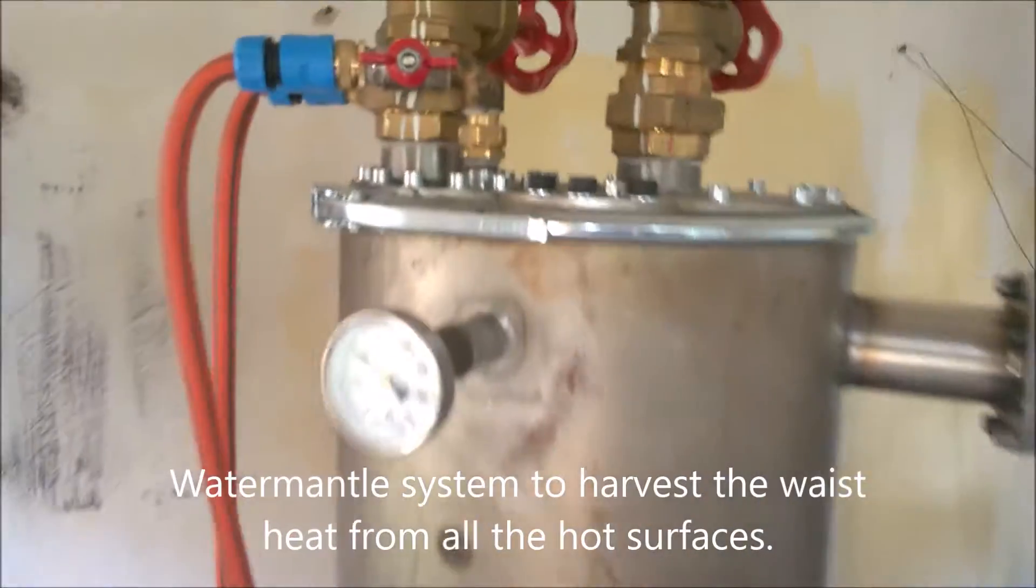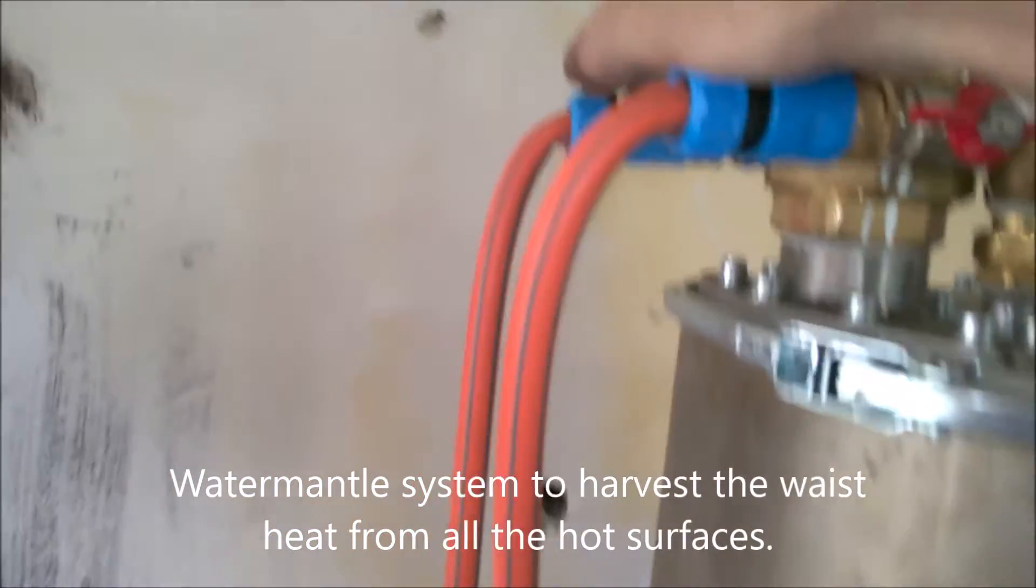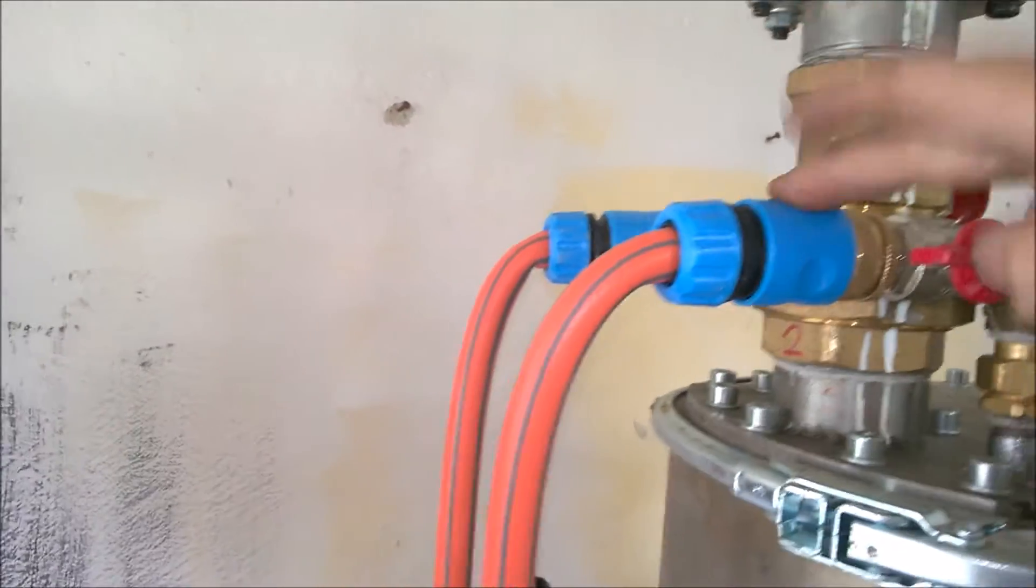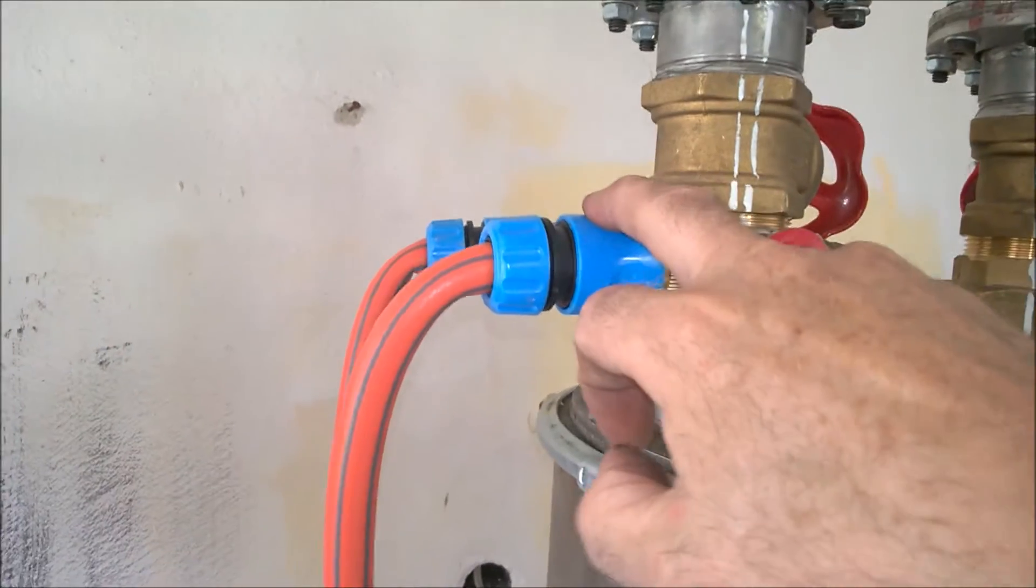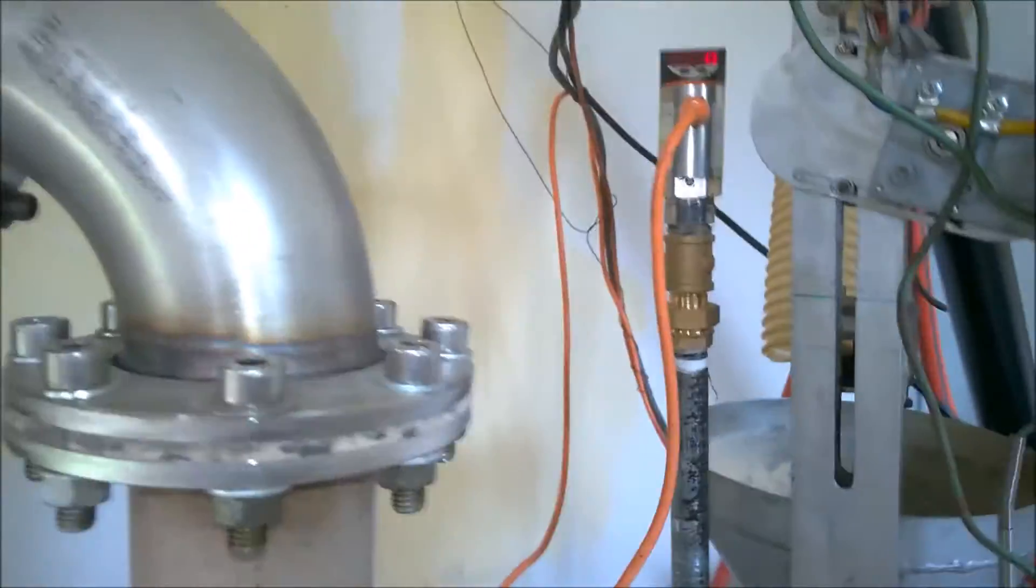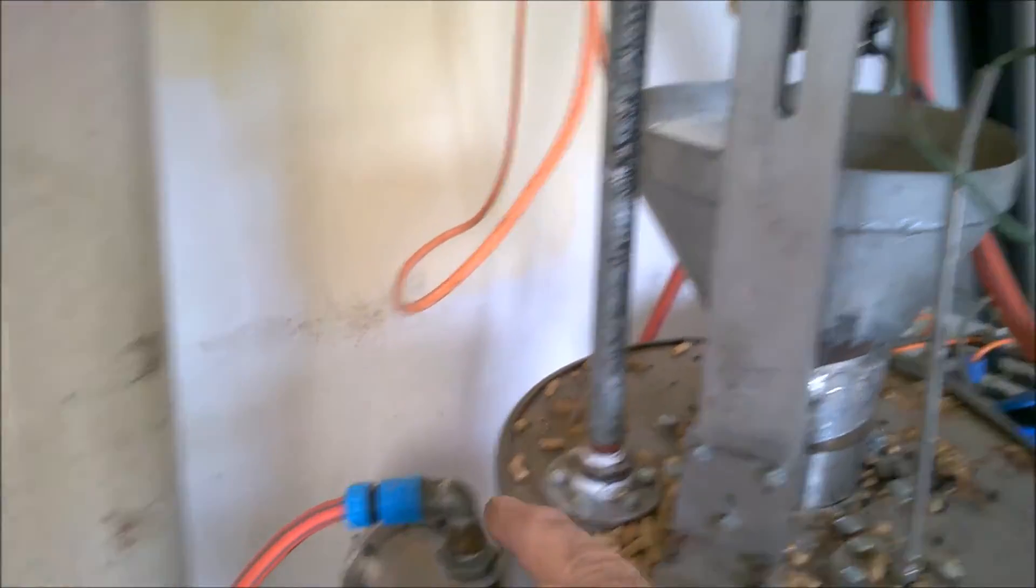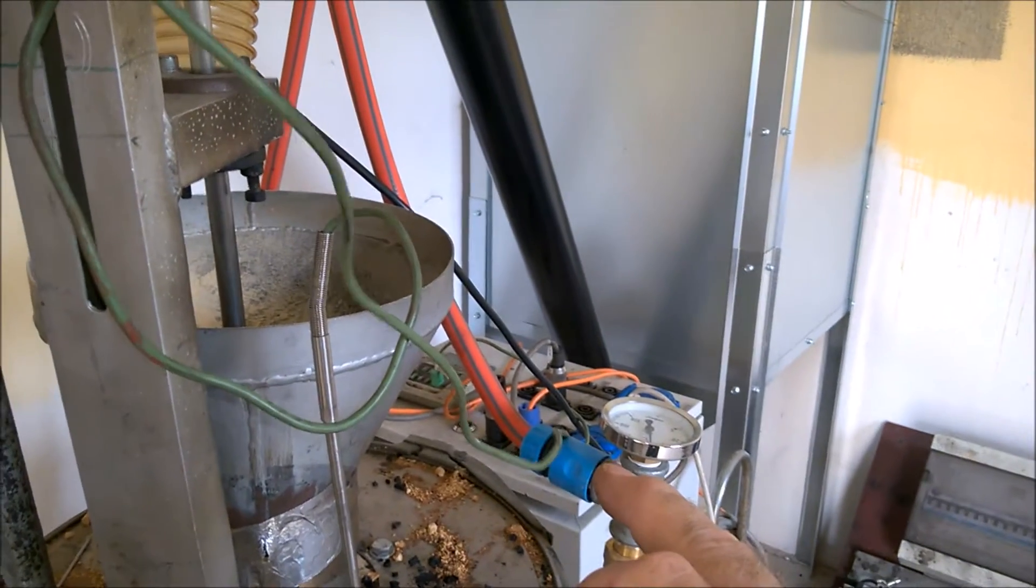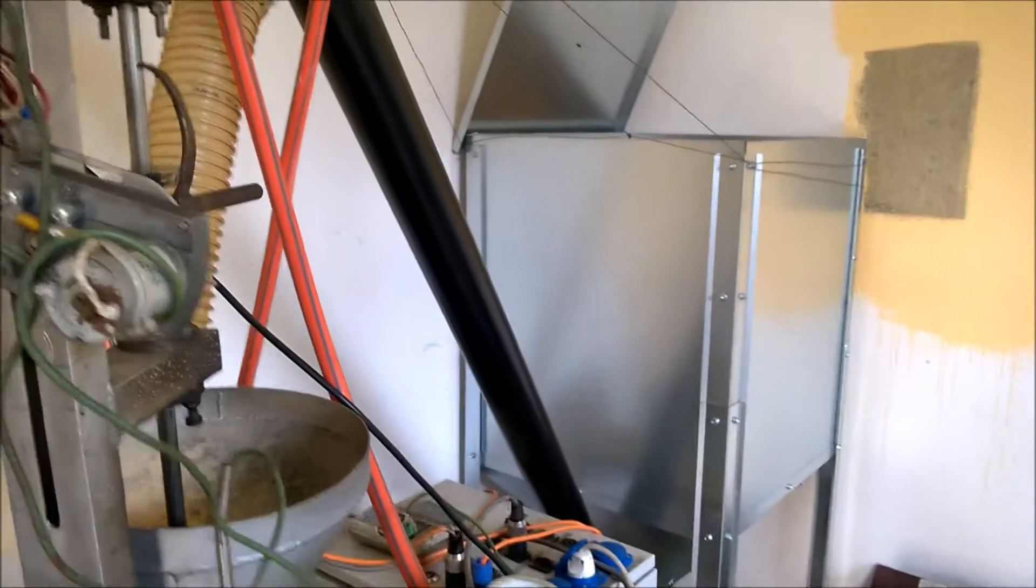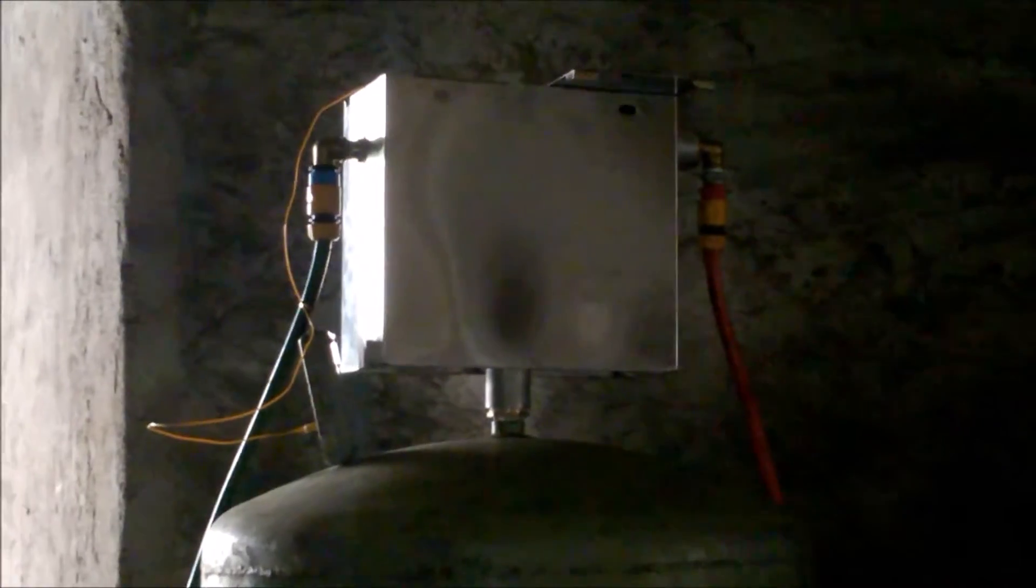Water comes in here, it goes through a condenser first, then it enters the gasifier. It exits the water mantle of the gasifier there and then it goes to the buffer. Let's have a look. And here we have the room where the buffer tank is. The water comes out from the gasifier room through these pipes.